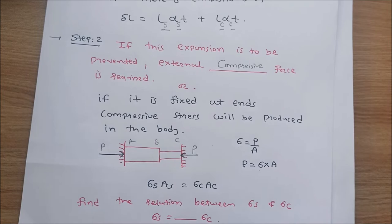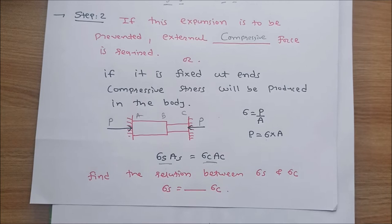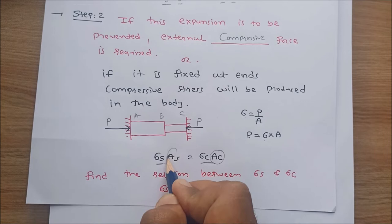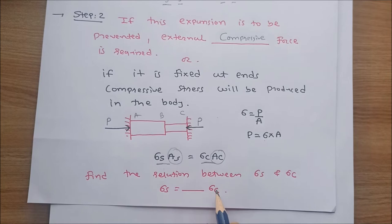Since sigma equals P divided by A, stress equals force per unit area, so force equals sigma times A. The compressive force in both members AB and BC are equal, so sigma_s times A_s equals sigma_c times A_c. In step number 2, we find the relation between sigma_s and sigma_c.